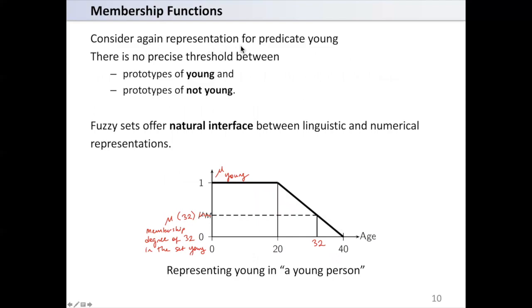Consider again representation for predicate young. There is no precise threshold between prototypes of young and prototypes of not young. Fuzzy sets offer natural interface between linguistic and numerical representation. Again, consider the representation of young in a young person. If you consider the age 32, this is the function for the membership of young. At 32, the value of the function, the membership degree of 32 in the set young, is some value less than 0.5, about 0.4 for this example.